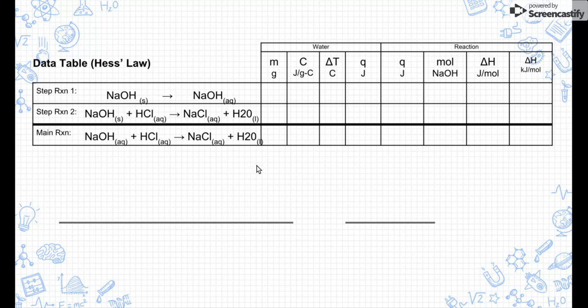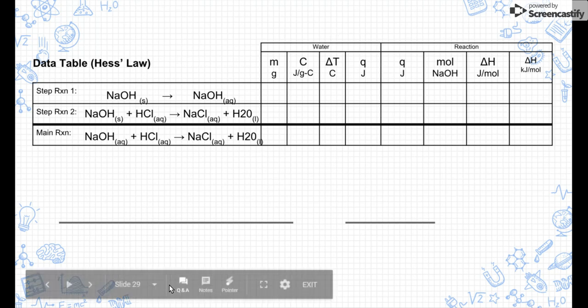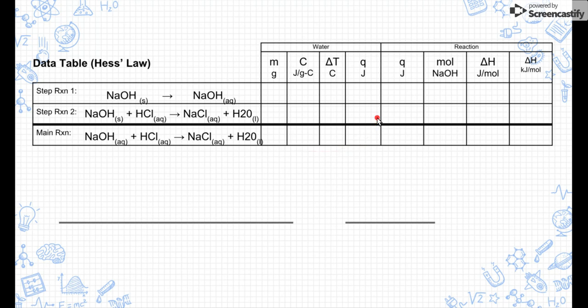Now I'm going to go through the data. Your data might be slightly different than mine, but I just want to explain the different parts. So keep your data and make sure you use your data when you're doing this. I'm going to start with the water section. You'll notice that we have this section right here and it all deals with water. That's because in a calorimetry experiment, water is what we do our reaction in because we know the specific heat of water.